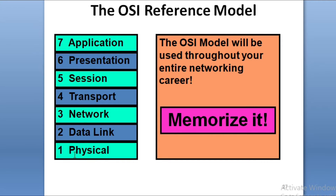The 7 layers from bottom to top are: Physical layer, Data Link layer, Network layer, Transport layer, Session layer, Presentation layer, and Application layer. From top to bottom they are: Application, Presentation, Session, Transport, Network, Data Link, and Physical layer.